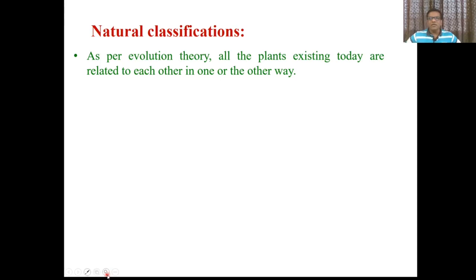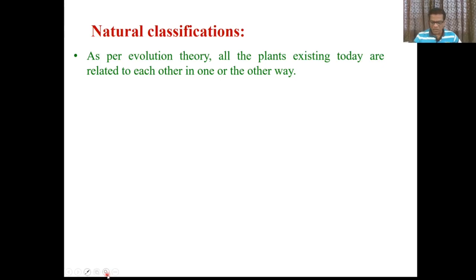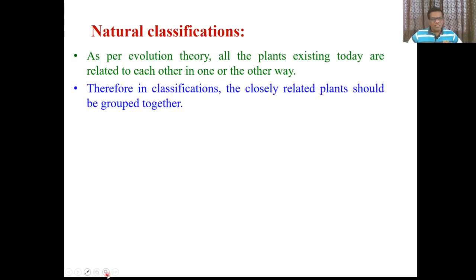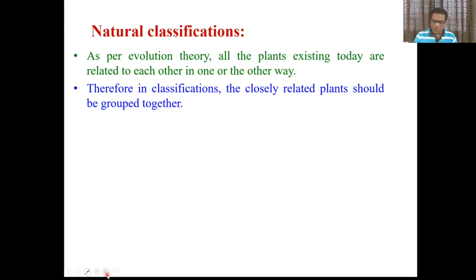Now come to the natural classifications. When the science of classifications advanced, taxonomists came to know that artificial classification is not a proper way to group organisms, and they moved to natural classifications. In natural classifications, all possible characters have been considered together. Each and every possible character is considered at the time of grouping. All the similarities and dissimilarities are studied. As per evolution theory, all plants existing today are related to each other and have evolved from one another.